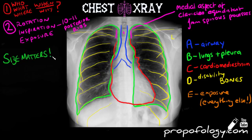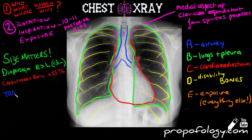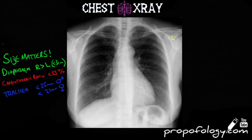Now that we've had a quick run around of the x-ray, we're going to start comparing sizes of different anatomical structures. In the diaphragm, the right diaphragm should be higher than the left, but no more than three centimeters. In terms of the heart, the cardiothoracic ratio should be less than 55% — meaning the heart should fill no more than 55% of the thoracic cavity.